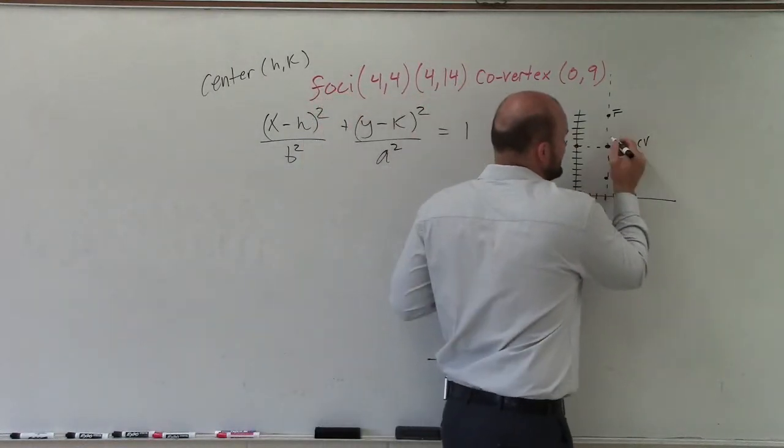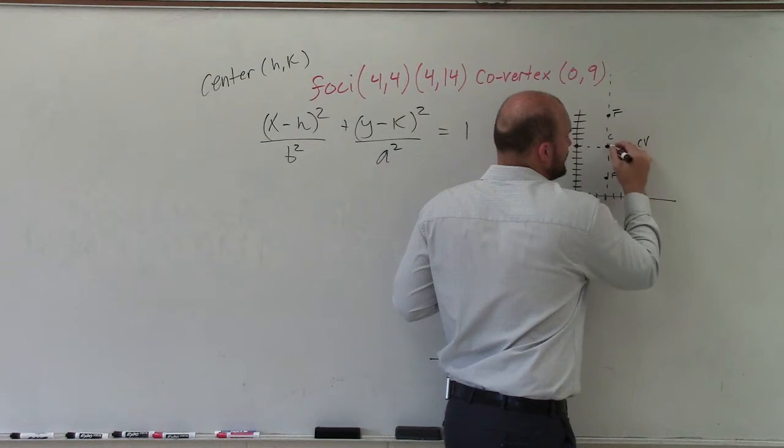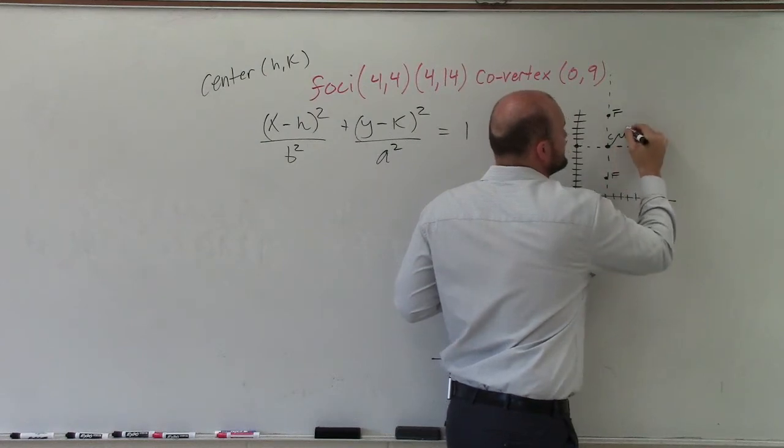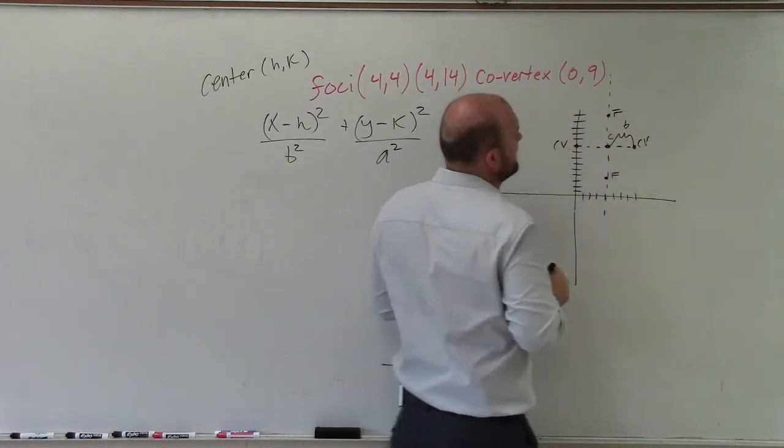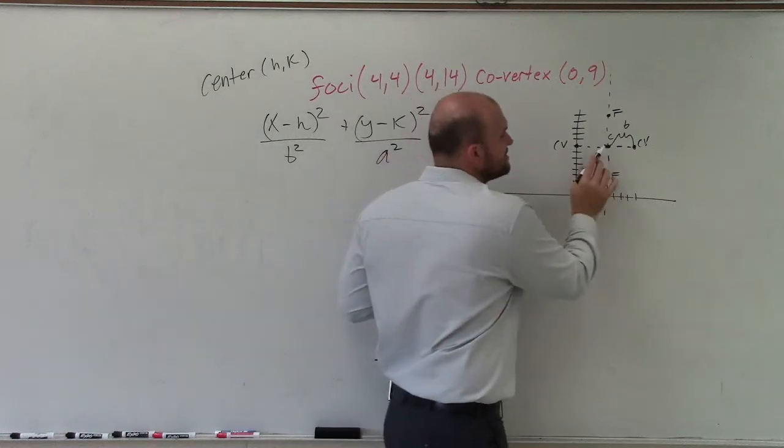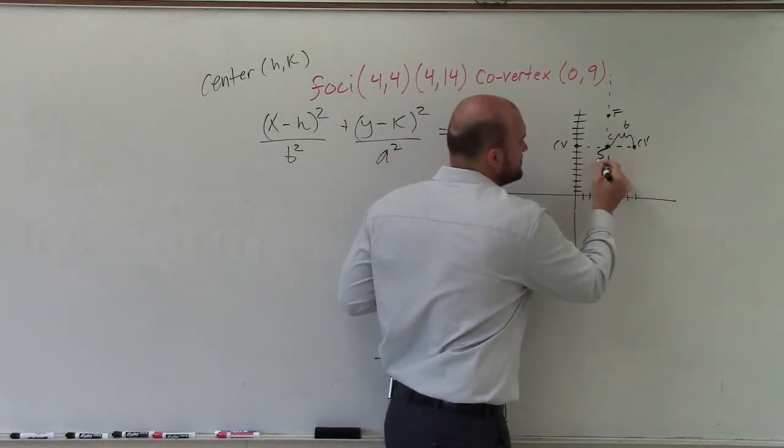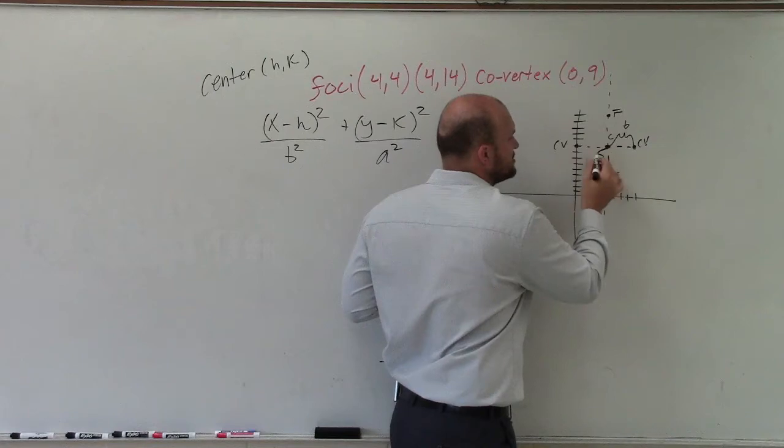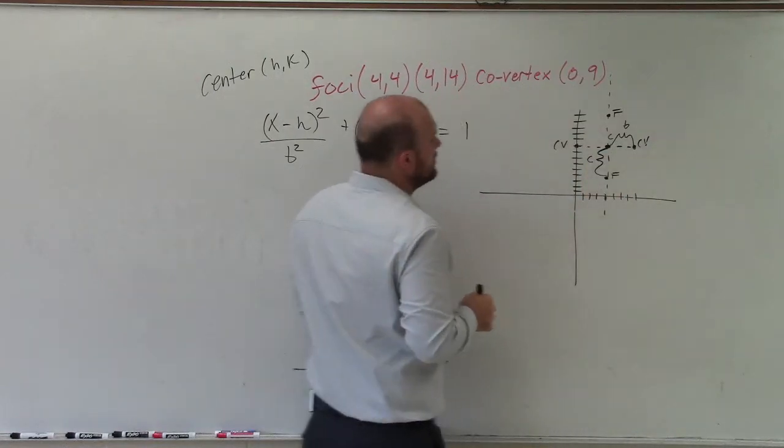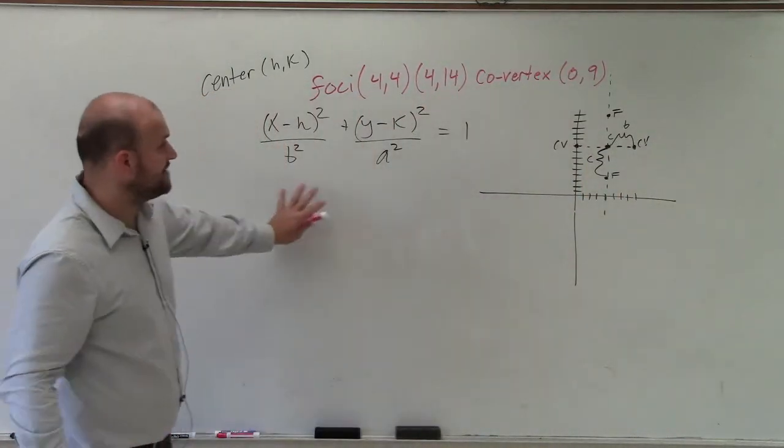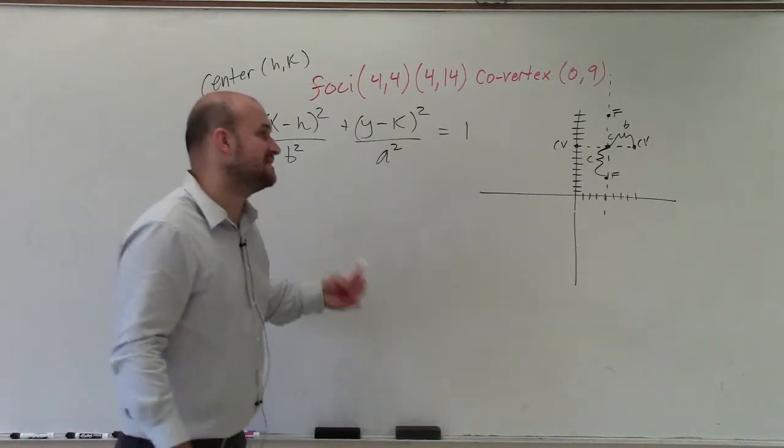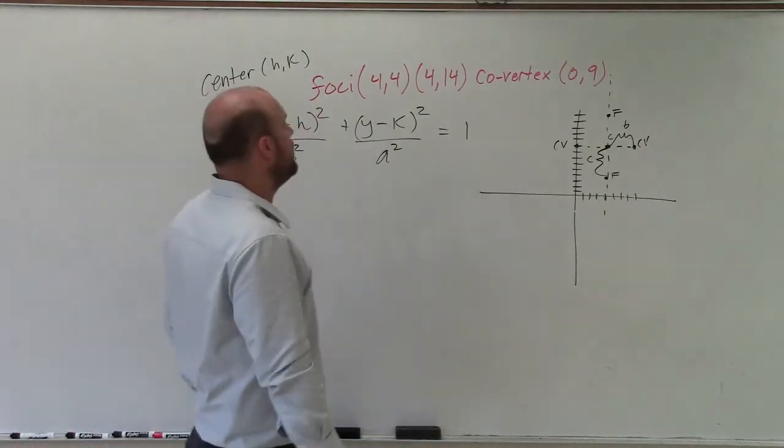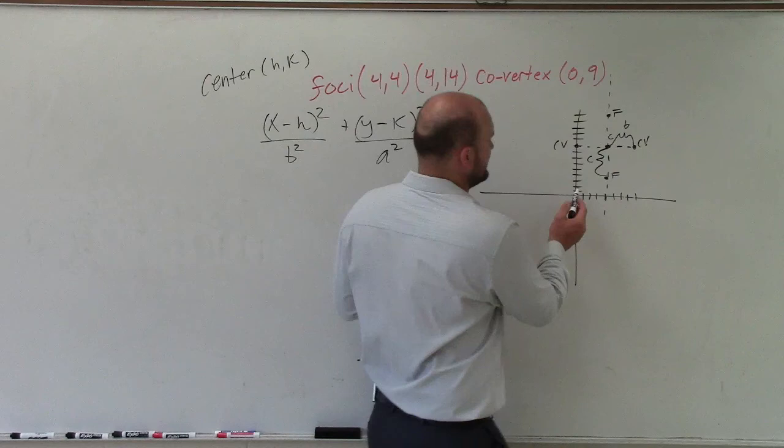The distance from the center to our co-vertex is what we call which we give the value of b. The distance from the center to the foci, or one of the focuses, is going to be c. So we don't have c in the equation, but we're going to need to know c to help us figure out what a is. The center, we did determine, is going to be at (4,9).